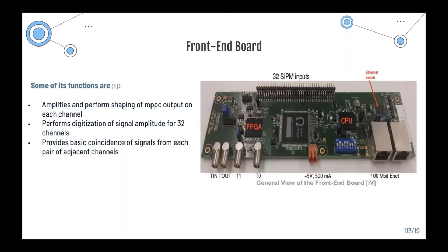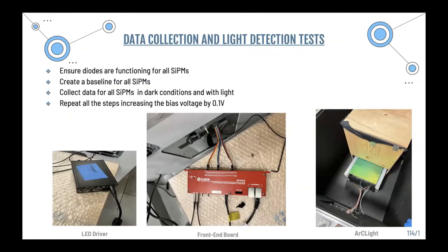Once the signal is produced, it is transmitted to the front-end board. The front-end board is a device able to amplify and digitize the signal received from the SiPMs. It amplifies and performs shaping of the MPPC output for each channel, performs digitization of signal amplitude across 32 channels, and provides basic coincidence signals from each pair of adjacent channels. The front-end board is interfaced with the computer through the Ethernet board. The wiring from the Arc Light system connects all the way up to the front-end board, which then transports the data through Ethernet to the computer.